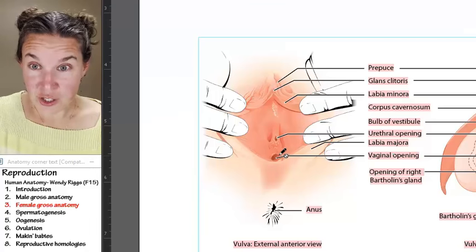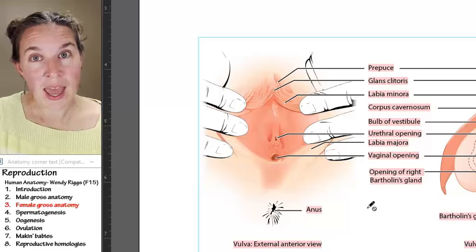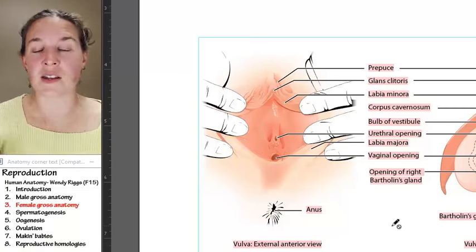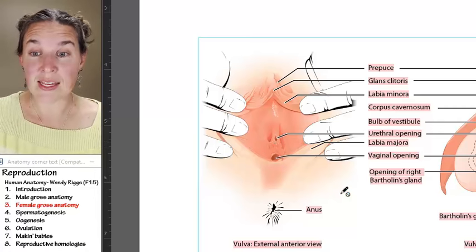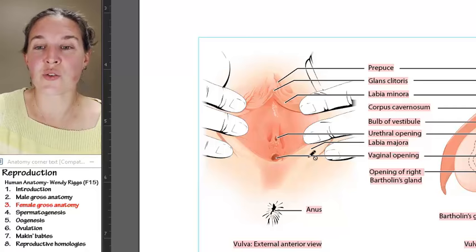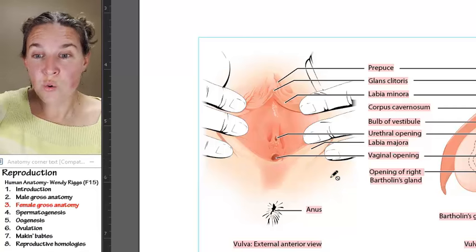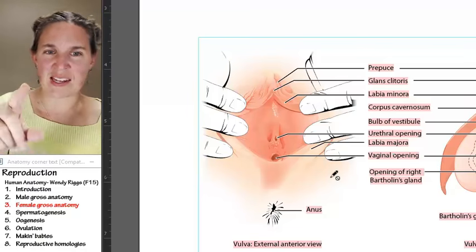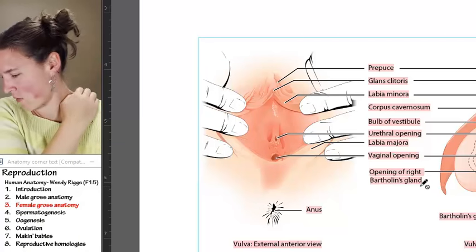Inferior to the clitoris, you have the urethral opening, and that is coming directly from the bladder. Nothing else comes out except for urine. But you'll see that that's actually a separate hole that is anterior to the vagina. This is the opening to the vagina. If you have a vagina, you don't have vagina unless you go in. The tube itself is the vagina.